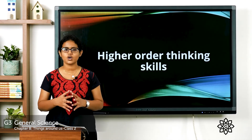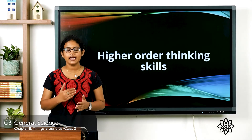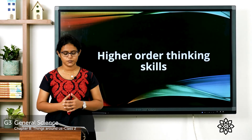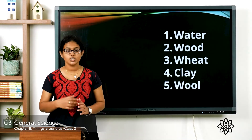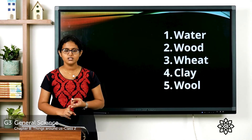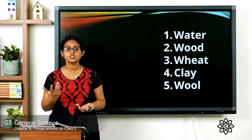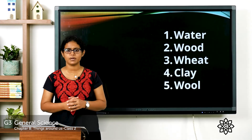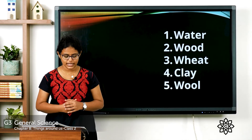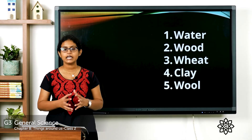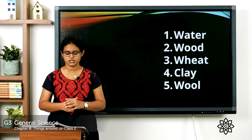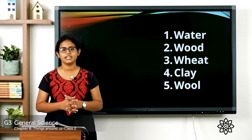Next is higher-order thinking skills. Name any one natural material you will use for the following: to build a house — water; to build a boat — wood; to make chapati — wheat; to make a pot — clay; to make a sweater — wool.